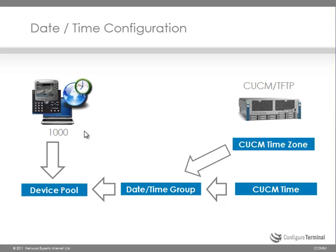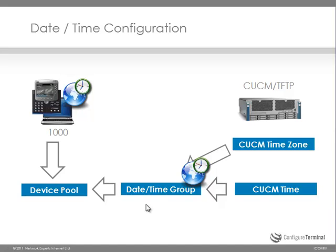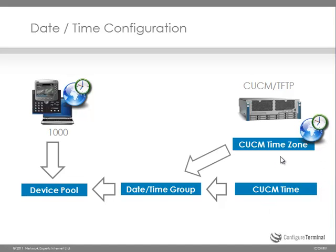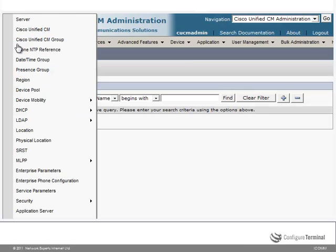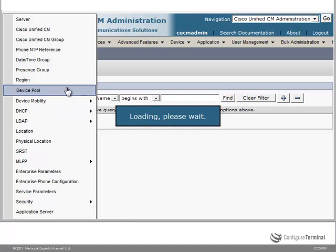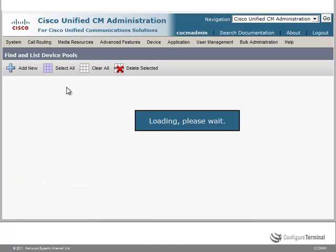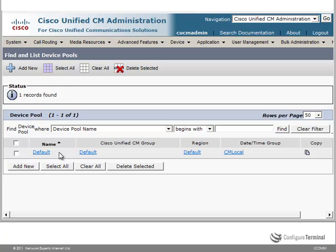The time on the phone is affected by which device pool it's allocated to, by the date and time group associated with that device pool, as well as the date and time on the CUCM and the time zone of the CUCM. You have to get all of this correct to get the right date and time on the phone. On the system menu, going to Device Pool will allow us to configure device pools. At the moment there is a default device pool, and notice CM local date time group is associated with the default device pool.